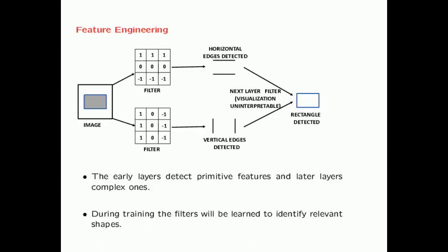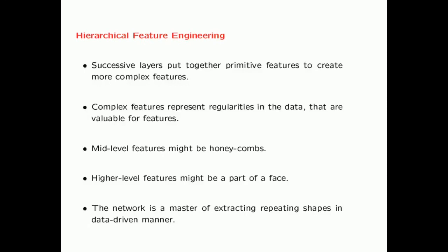It is this hierarchical feature engineering which explains the success of convolutional neural networks — they can detect very semantically interpretable features. For example, early layers detect edges, mid-level features might be something like a honeycomb pattern, and high-level features might be part of a face. The network becomes a master at detecting and abstracting these repeating characteristics in a data-driven manner — extracting face-specific features from a face database, or truck-specific features from a truck database.